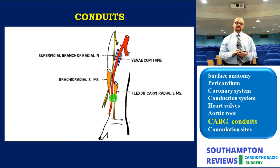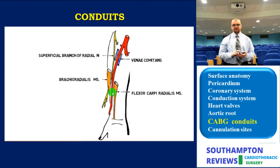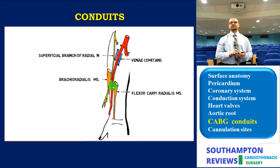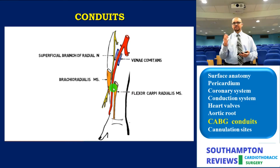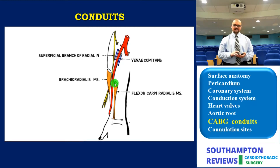A technical tip: if the fascia overlying the radial artery is thick and you cannot visualize the artery or its pulsation clearly, you can demonstrate this plane by slightly flexing and abducting the wrist simultaneously. This expresses the belly of the flexor carpi radialis, allowing you to identify the plane. We know the flexor carpi radialis inserts into the base of the second and third metatarsal bones and produces abduction and flexion of the wrist.